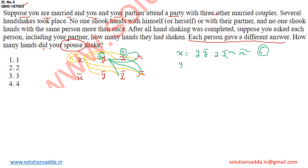Next we have Y in the list. Y already shook hands with X, and then Y shook hands with Z, Z̄, R, and R̄ — total handshakes for Y is 5. Next we have R. R already shook hands with X and Y. R can shake hands with Z and Z̄. Total handshakes done by R equals 4.